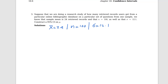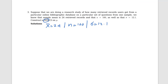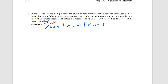Last time we did a 95% confidence interval, so you know how to find z-star for 95%. Let me change this one. Instead of 95%, we will find the confidence interval for 80%. So this is an 80% confidence interval on mu. The confidence interval formula is x-bar plus or minus E, where E is z-star times sigma over root n.